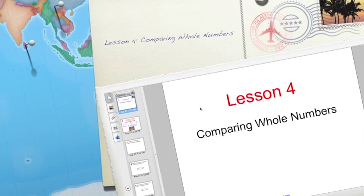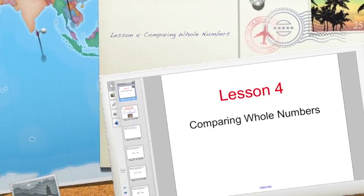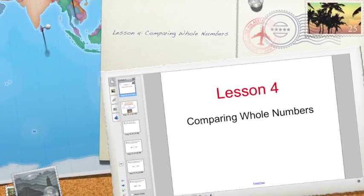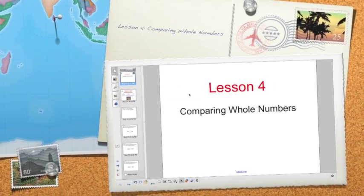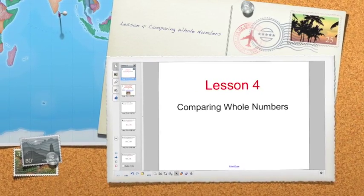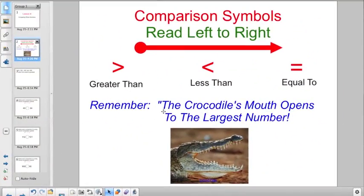Good morning everybody, welcome to math lesson 4. Today we're talking all about comparing whole numbers. The first thing we want to talk about is the three comparison symbols, and when you read those comparison symbols you have to read them left to right.